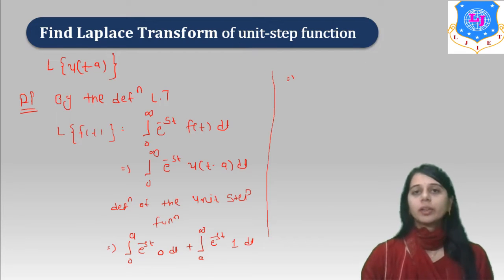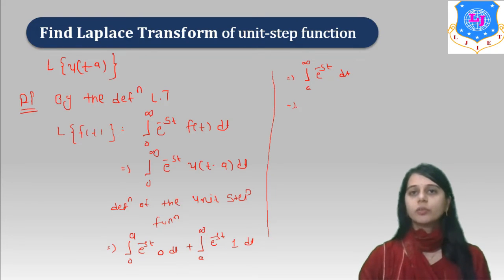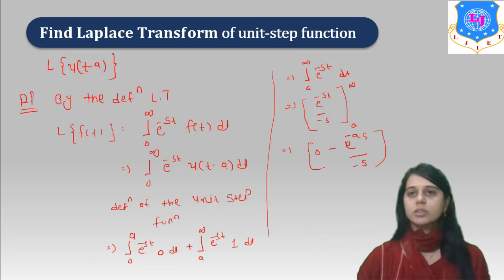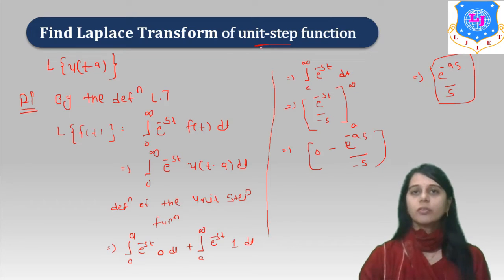This reduces to the integral from a to infinity of e raised to minus st dt, which evaluates as e raised to minus st over minus s, evaluated from a to infinity. This gives 0 minus e raised to minus as over minus s. So the answer is e raised to minus as over s, which is the Laplace transform of the Unit Step function.